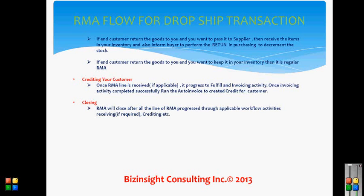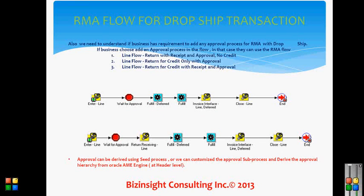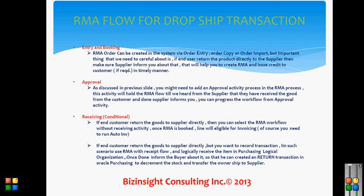The next step is crediting your customers. Once the RMA line is received, it progresses to the fulfillment and invoicing activity. Once the invoicing activity is completed successfully, run auto invoice to create the credit for the customer, and then the closing activity completes as usual. In summary: if you have a flow without a receiving activity, as soon as you book the order it is eligible for a credit memo; if you have a receiving activity, you must do logical or actual receiving based on your business need before the line becomes eligible for the credit memo.